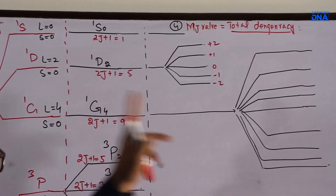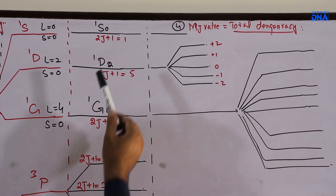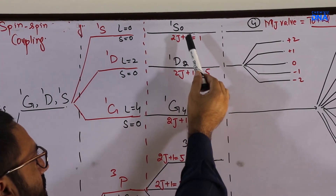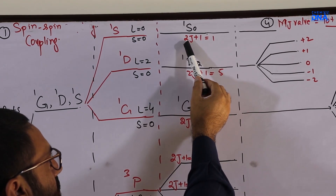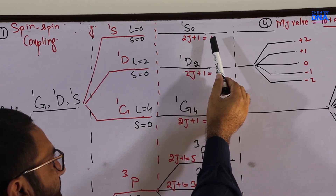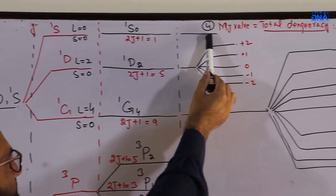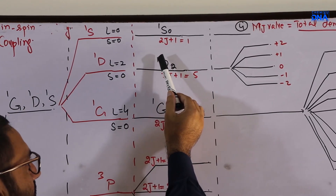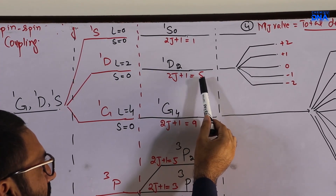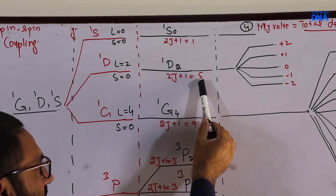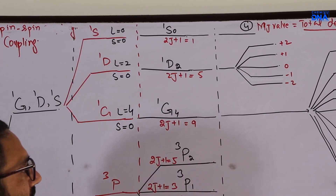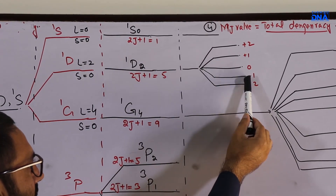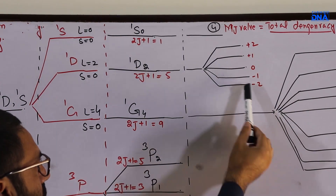For the mJ values: for J=0 in ¹S₀, using the formula 2J+1 you get only one splitting. For ¹D₂, you will have 5 further splittings — that is, mJ = −2, −1, 0, +1, +2 — giving 5 total degeneracies in the ¹D₂ term.